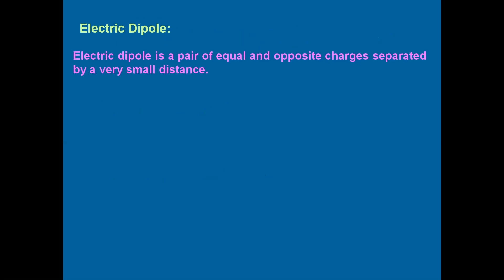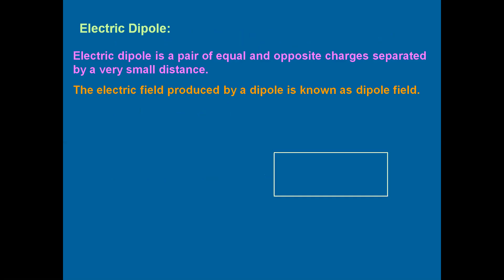Electric field due to an electric dipole can otherwise be called a dipole field. To represent an electric dipole geometrically, we conventionally draw the negative charge on the left side and the positive charge on the right side.